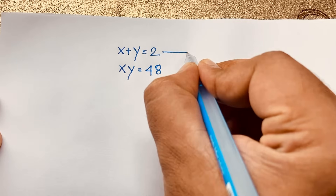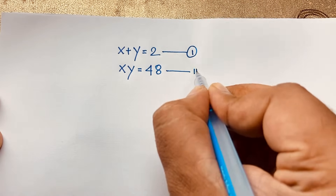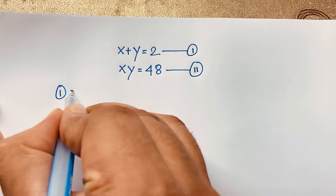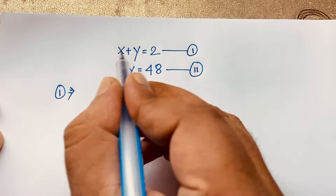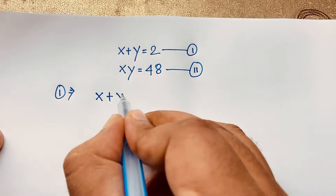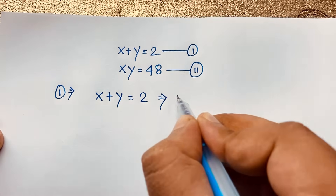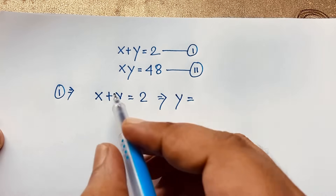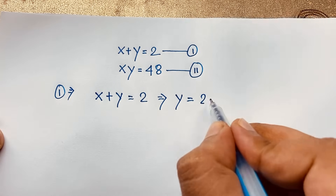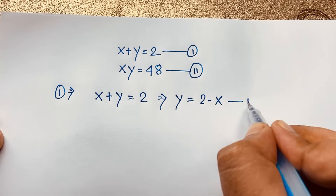This is our first equation and this is our second equation. According to the first equation, x plus y is equal to 2. Then y is equal to — if I move x to the other side — it will be 2 minus x. This is our third equation.